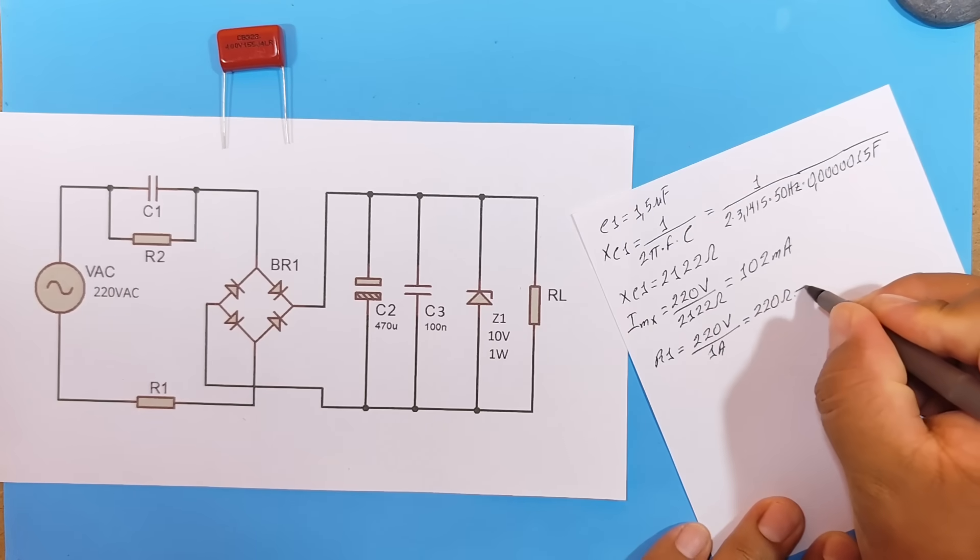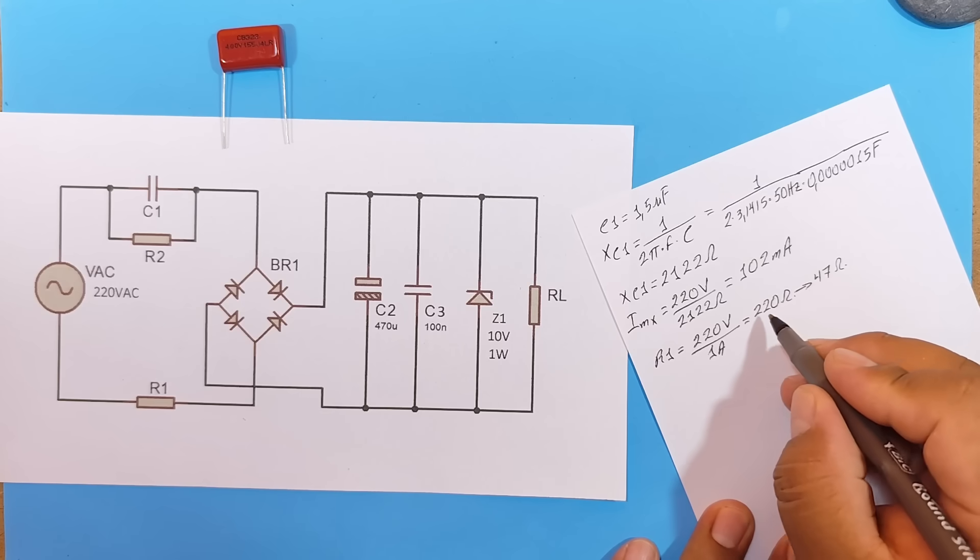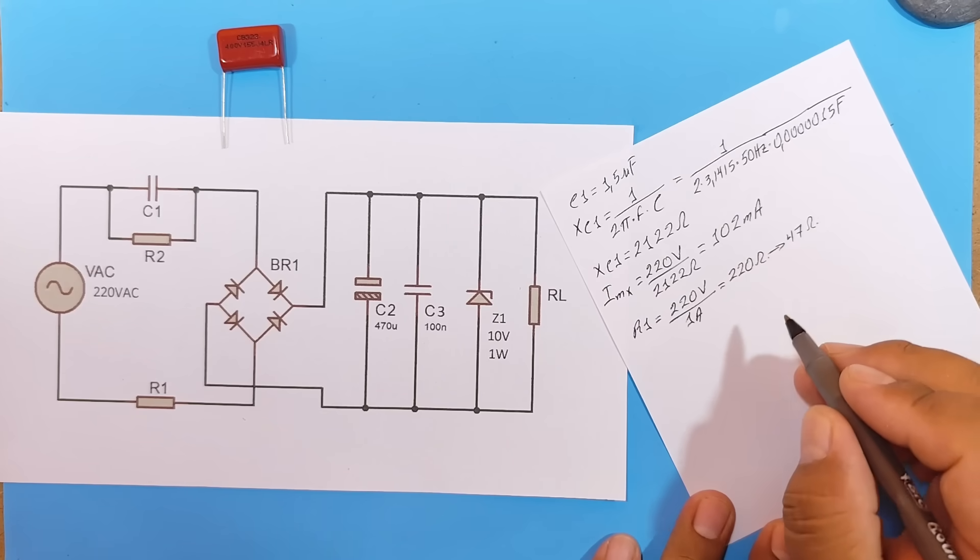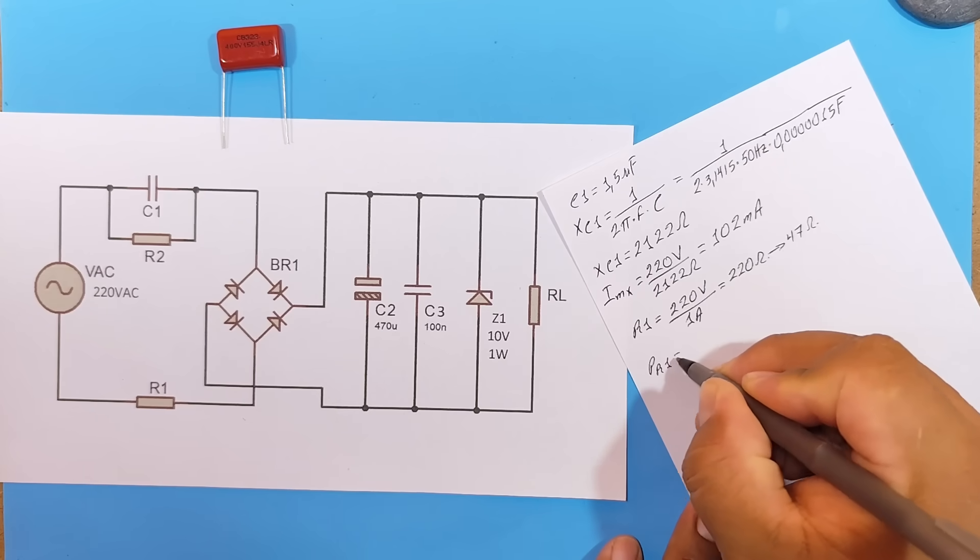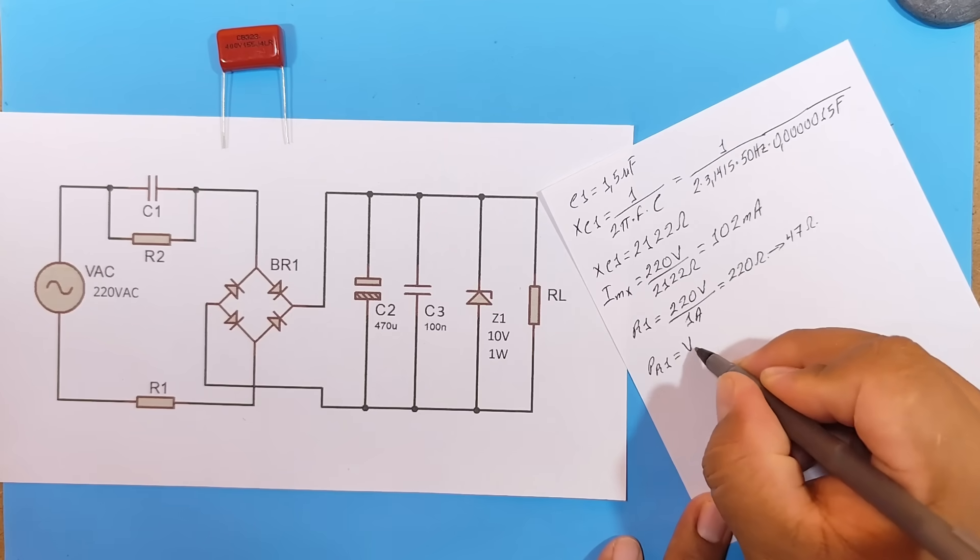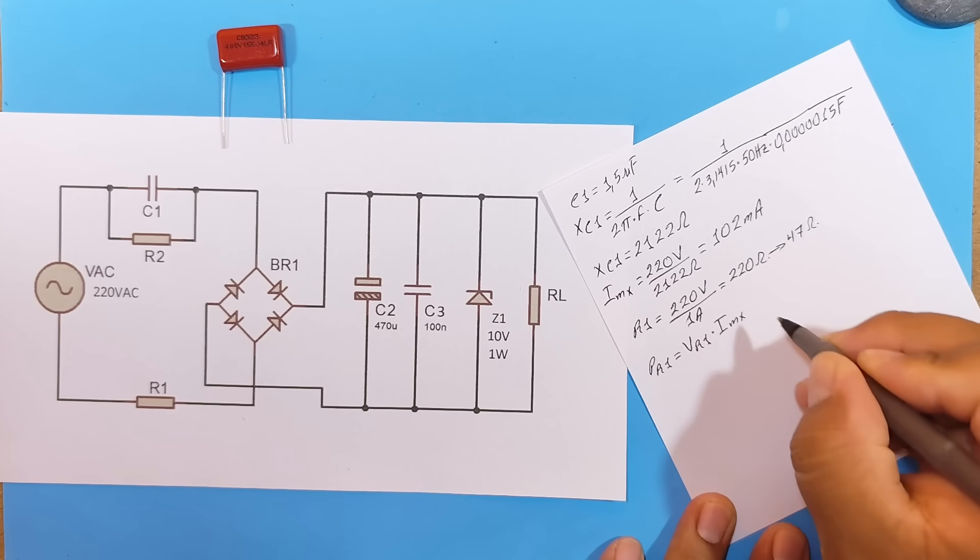Now, I am going to use a 47 ohm resistor. However, what would happen if we used 220 ohms? Well, the power or size of that resistor would be equal to the voltage falling across it, multiplied by the current passing through it.